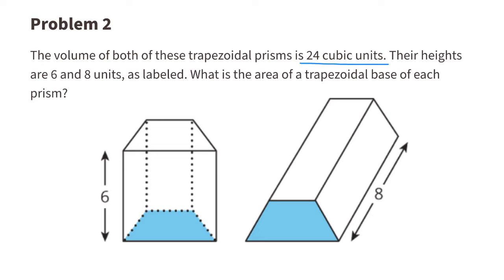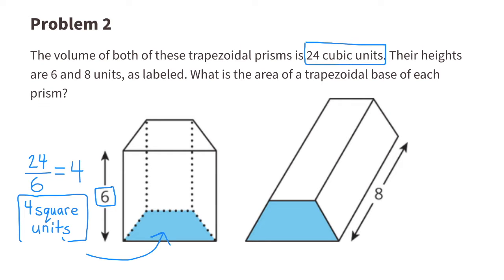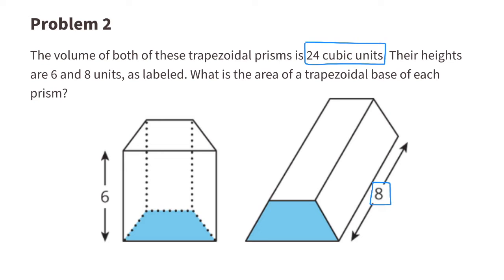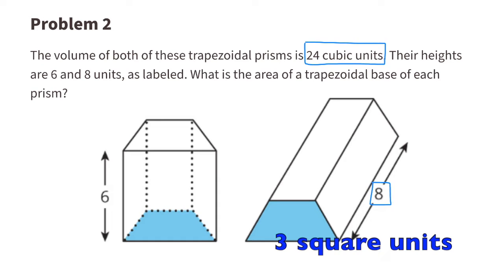Problem number 2. The volume of both of these trapezoid prisms is 24 cubic units. Their heights are 6 and 8 units as labeled. What is the area of a trapezoid base of each prism? To find the area of the trapezoid's base, we divide the volume by its height. 24 divided by 6 is 4, so the area of the trapezoid base is 4 square units. The height of the prism on the right is 8 units, so 24 divided by 8 is 3, meaning the area of that trapezoid base is 3 square units.